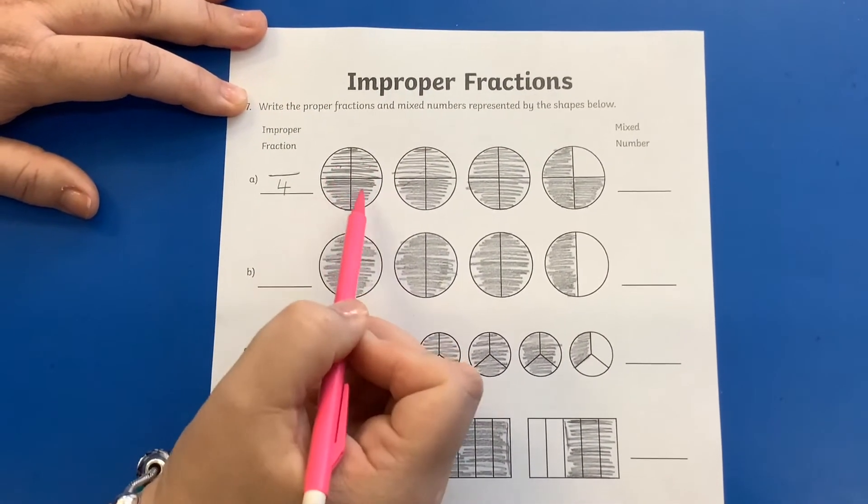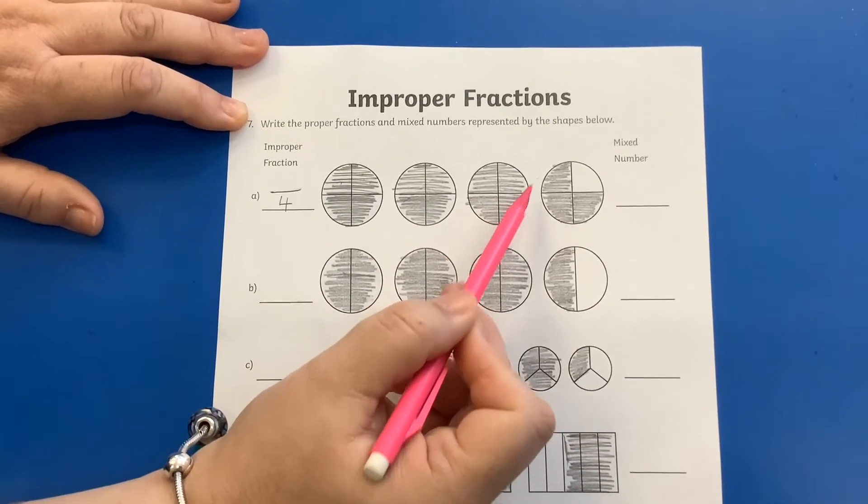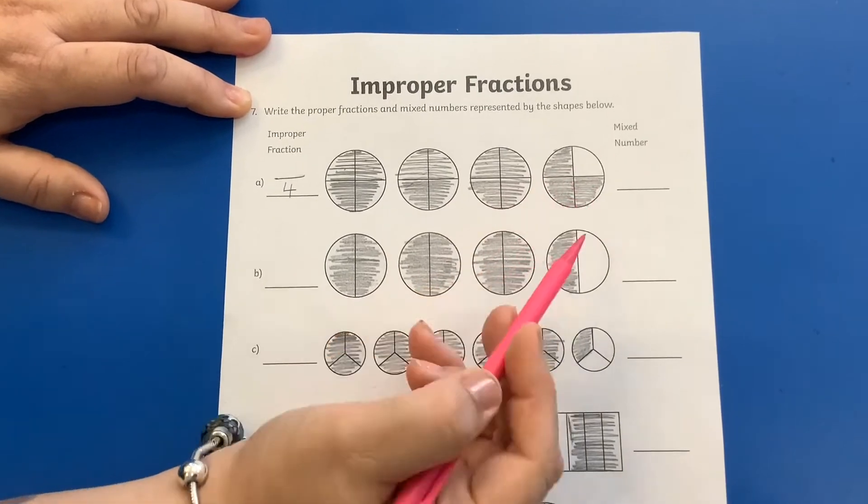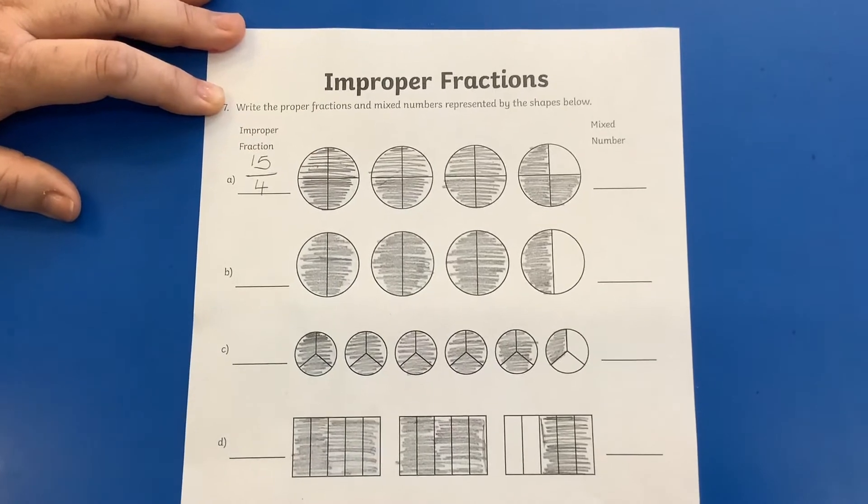So I've got one, two, three, four, five, six, seven, eight, nine, ten, eleven, twelve, thirteen, fourteen, fifteen. So I've got fifteen quarters that are shaded.